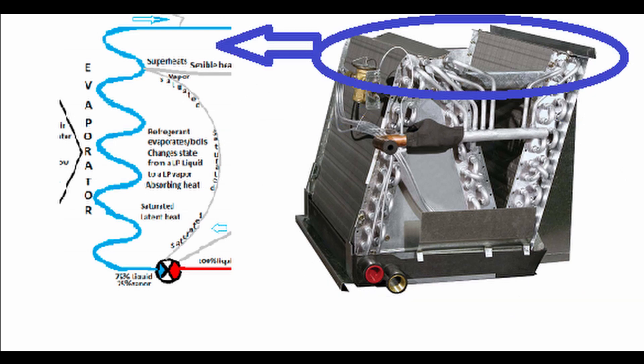After we boil all that liquid into a vapor, we can continue to add heat to it. This is going to be sensible heat — the refrigerant is still absorbing heat but it's now measurable. This is the very last small section of that evaporator coil. This is where superheat starts: the refrigerant is absorbing heat above its saturation temperature, becoming a superheated vapor.